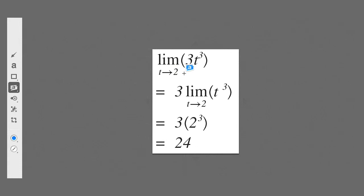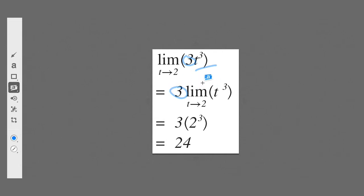Let's look at another law. We have the limit as t approaches 2 of 3t cubed. We have this constant k, which is 3, and we just bring it outside the limit, then take the limit of the polynomial t cubed. We take the limit as t approaches 2 just of t, which is 2, and then cube it to get 8. The key point is just bringing the constant coefficient out of the limit — you can bring out the 3, but not the variable. So 3 times 8 is indeed 24.